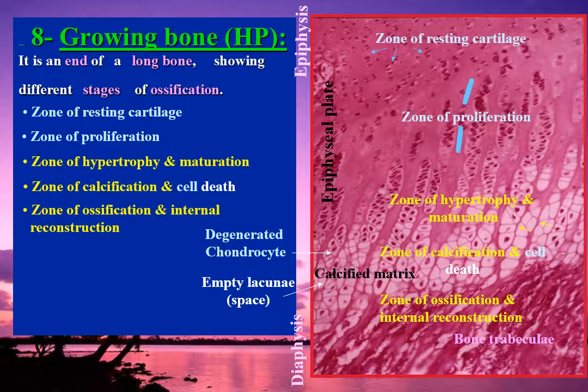The bone formed in this way is immature cancellous bone, which is later replaced by mature cancellous bone. This may remain as such or change to compact bone by internal reconstruction. Some mesenchymal cells change to osteoclasts and start to remove the calcified cartilage and their bony coverings, while others change to blood elements and start to form the bone marrow.